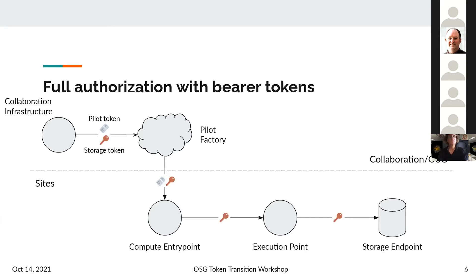For authorization along the full chain without X509 proxies, a storage token will replace the X509 proxy. The pilot token still makes its way to the CE, but the storage token is what makes its way to the execution endpoint, allowing access to the storage endpoint.